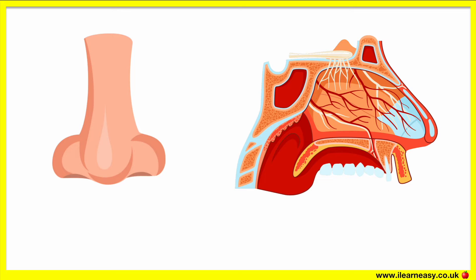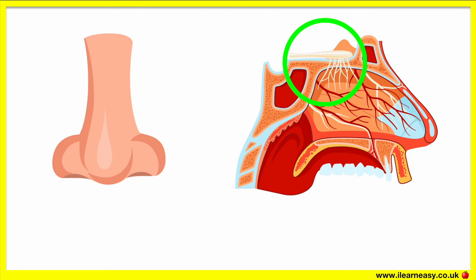The nasal cavity is a space behind the nose that connects to the back of the throat. We are able to smell things due to the olfactory epithelium, which lines the olfactory cleft of the nasal cavity. The olfactory epithelium contains special receptors which recognise the smell and send signals along the olfactory nerve to the olfactory bulb. The signals are sent around parts of the brain in order to be interpreted as a smell.